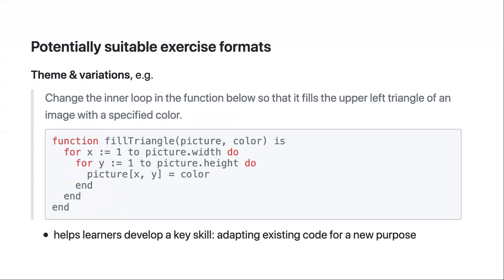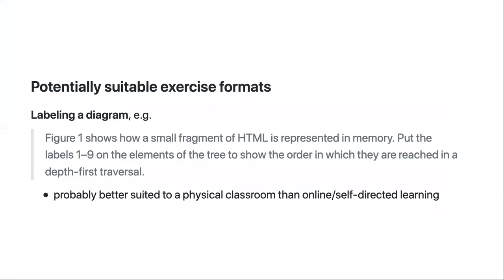Theme and variations. This is going to help people adapt existing code for a new purpose. Instead of fixing a problem, you give them working code, but working code that does something else, and you say now change this so that it does the new thing that you want it to do. I can see how this could be applied in quite a lot of cases with teaching workflows as well. One of the easiest ways to get your workflow to do the thing you want it to do is find a workflow that someone else has written that already does that thing and then figure out what bits you need to change to adapt it to your purpose. So another key skill that we want to teach to people in this tutorial.